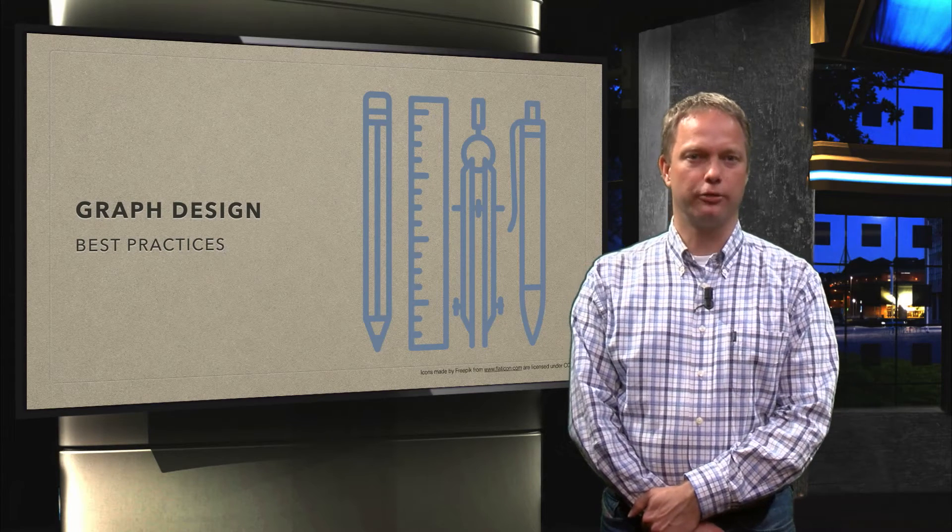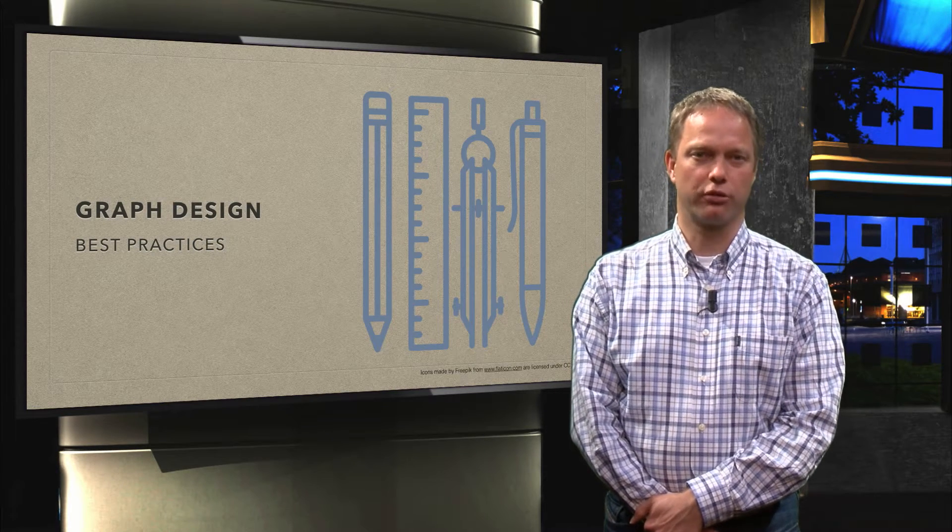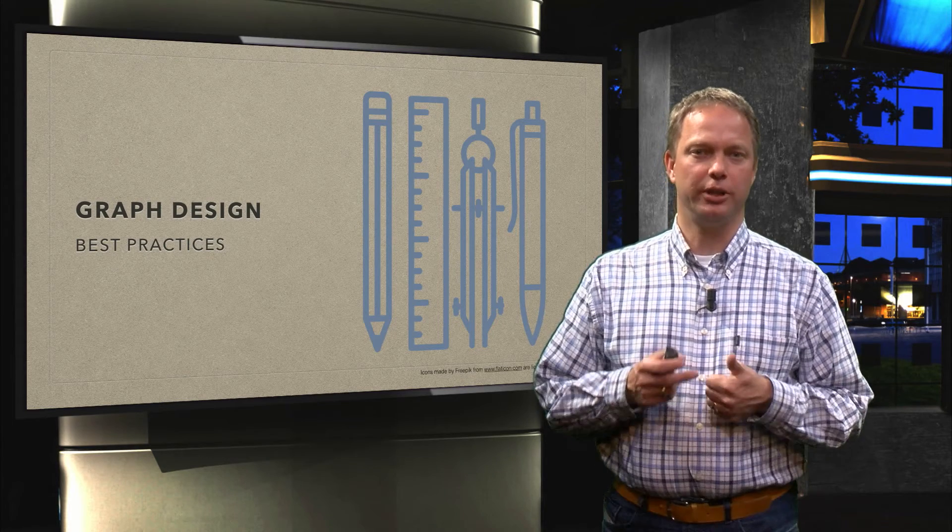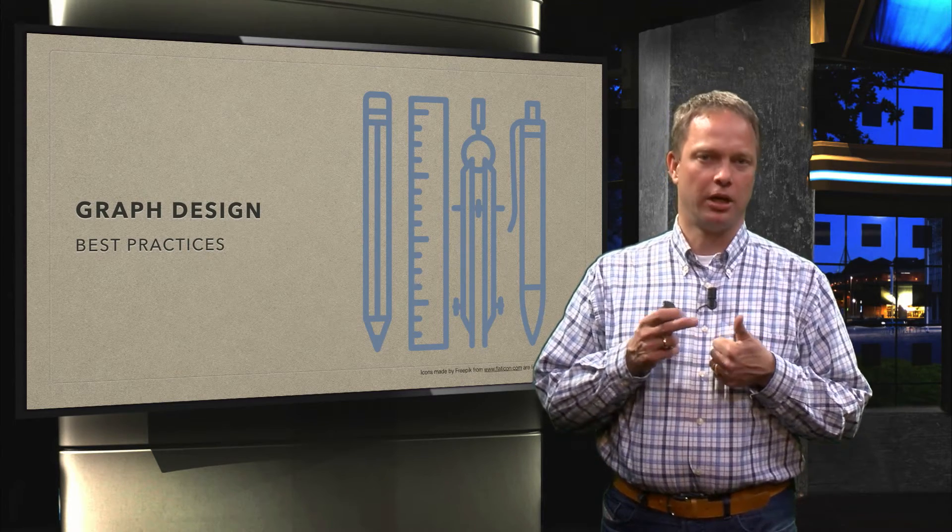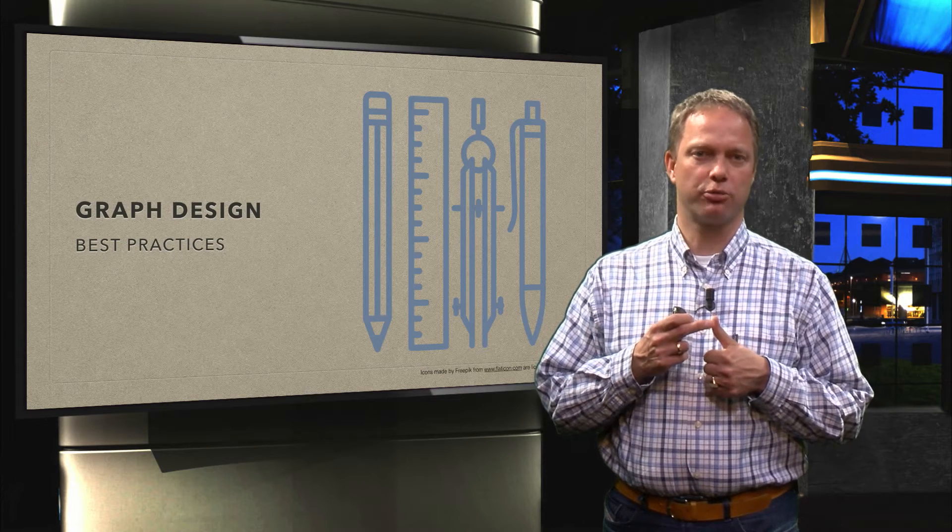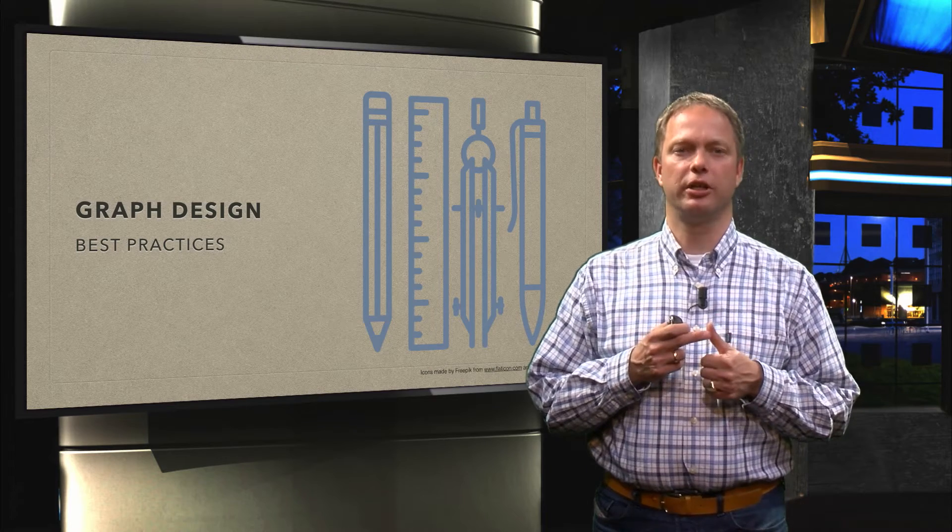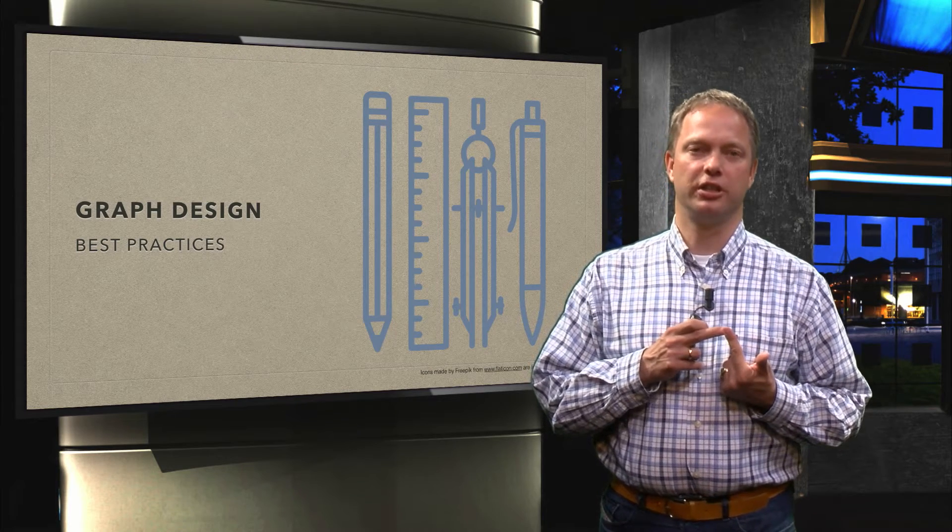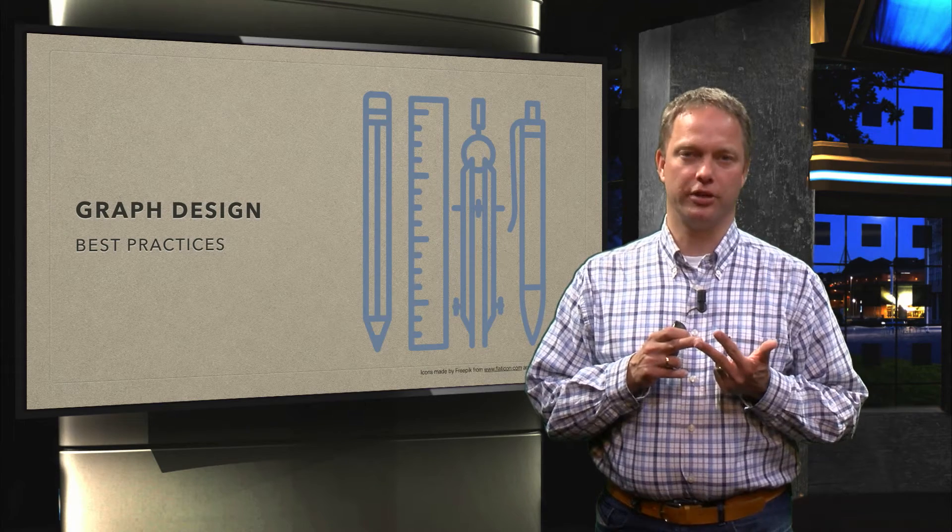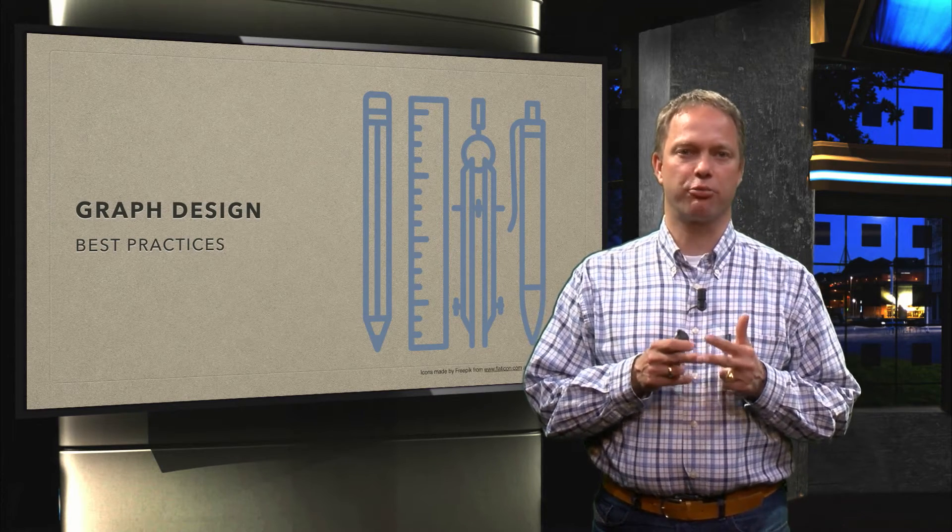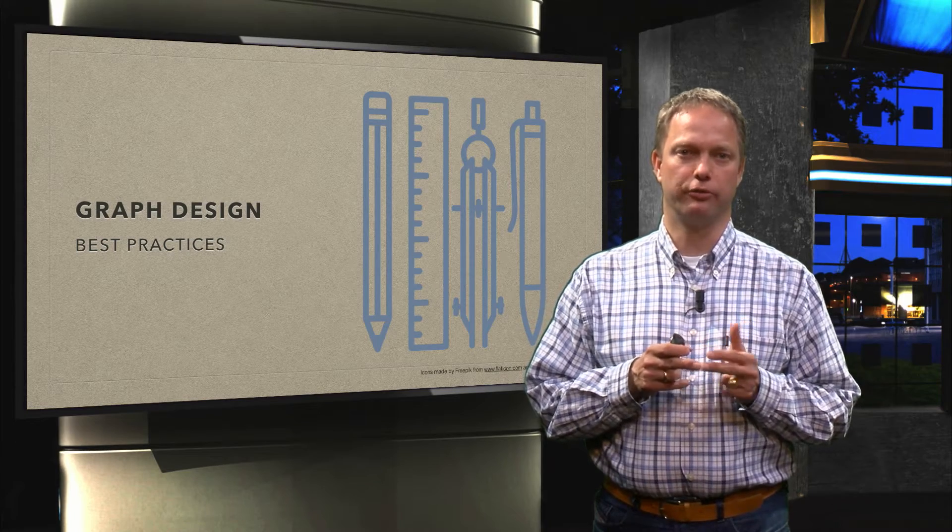So last time we looked at the design of graphs from a structural point of view. This time we are going to look at the best practices. What we needed to remind from the last time was try to stay as close as possible to the truth. Do not try to manipulate your readers. Never use a 3D graph and try to avoid pie charts. In this session we are going to focus on some of the best practices to create really beautiful graphs.